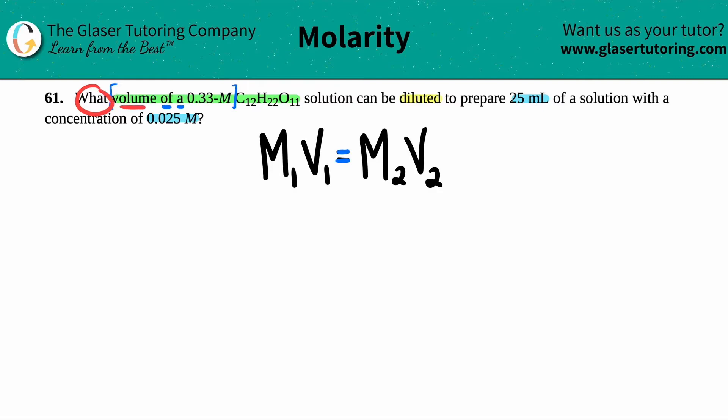Now, in this case, they're asking what volume? So this is literally the question. We're trying to find that volume. So that's X, but they gave me the corresponding molarity. So I actually know one side of the equation. Let's put it on the left side. So let's see. The molarity would be the 0.33, so 0.33 molarity. And the volume that corresponds is, that's what we're looking for. It said what volume? So this is the X value.